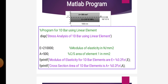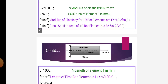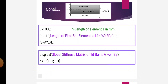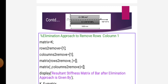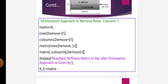In the MATLAB program, we solve the program for a 1D bar using linear elements. In this program, the modulus of elasticity is given as 2,100,000 and area is given as 500. In the next steps, we find the length of the element in mm. After this, we apply the elimination approach to remove rows and columns. Matrix K with rows and column removed is computed and the result is obtained.